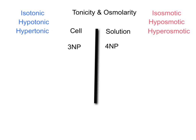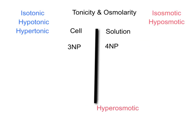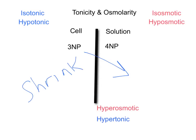In the third situation, the solution now has four versus the cell's three non-penetrating particles, meaning the solution has more, so it is hyperosmotic — the solution is hyperosmotic to the cell, and the cell is hypoosmotic to the solution. Looking at the movement of water, it goes into the area of higher concentration of non-penetrating particles, so water leaves the cell. The cell shrinks, which means the solution is hypertonic.